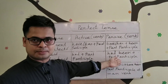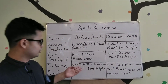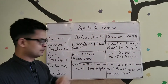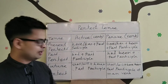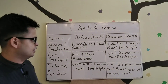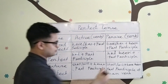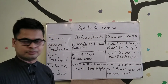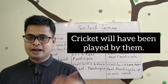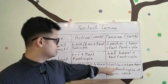The last one is future perfect tense. In active voice, we use 'shall/will' plus 'have' plus the past participle. For example: 'He will have done the work.' In passive voice, we use 'shall/will' plus 'have been' plus the past participle. For example: 'Cricket will have been played by them.' This example corresponds to future perfect passive voice.